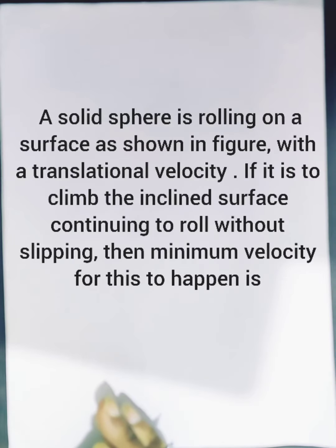A solid sphere is rolling on a surface as shown in the figure with a translational velocity v meters per second. If it is to climb the inclined surface continuing to roll without slipping, then what is the minimum velocity for this to happen?